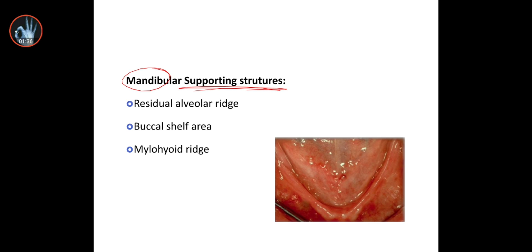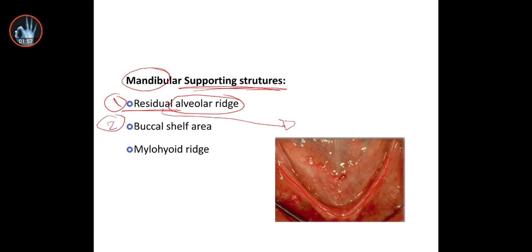We have three anatomical supporting landmarks of the mandible. Number one is the residual alveolar ridge — residual means there are no teeth on the alveolar process. The second is the buccal shelf.